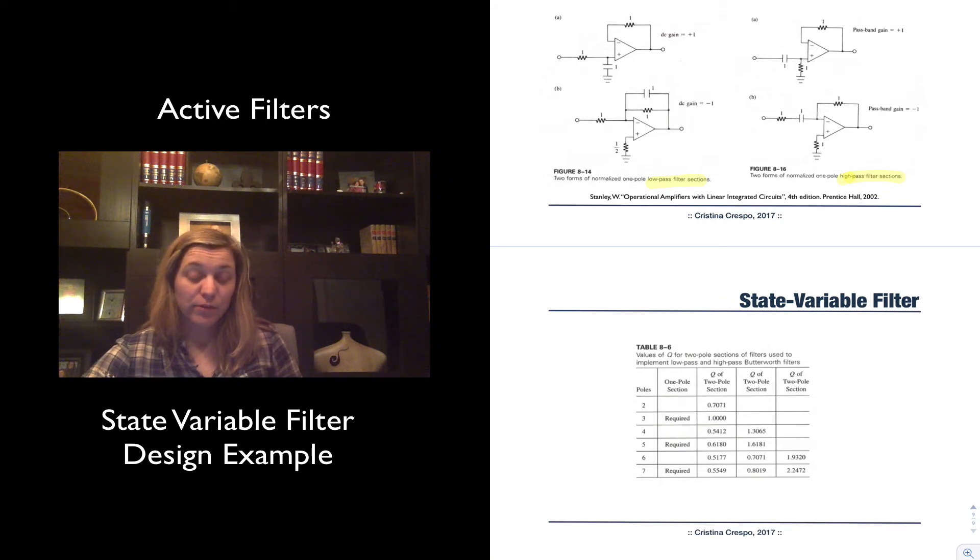For a third-order filter, you will need a required one-pole section and a two-pole section with a Q-value of 1. For a fourth-order filter, you will need two two-pole sections, fifth order, one one-pole section, and two two-pole sections, etc.